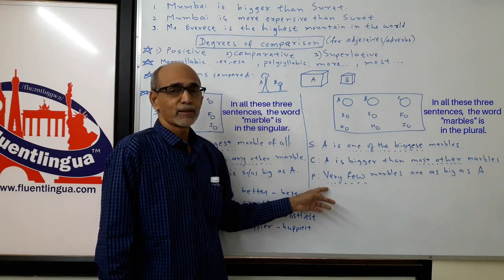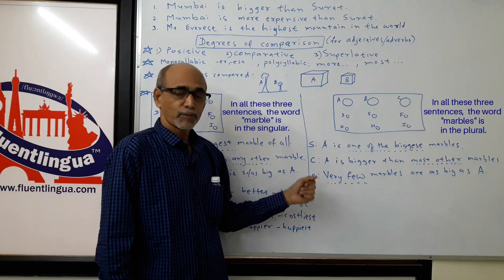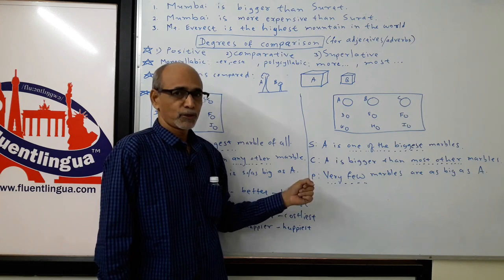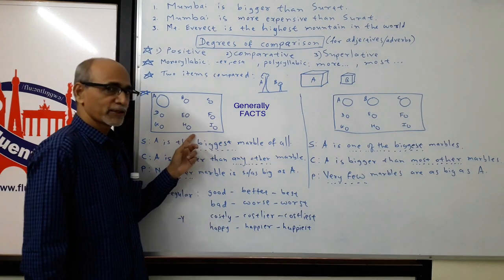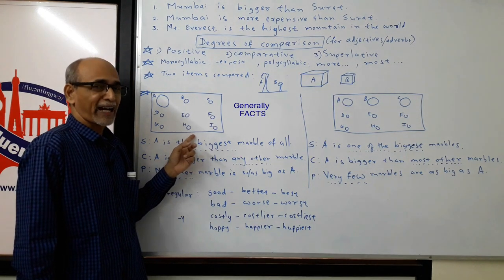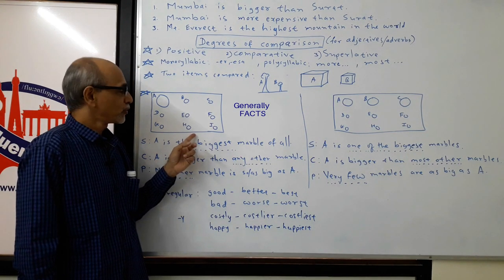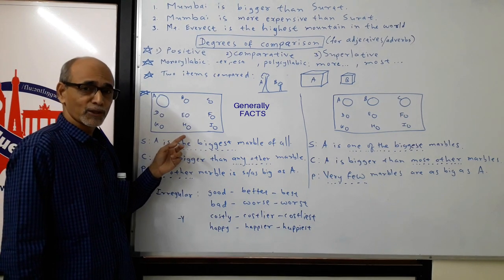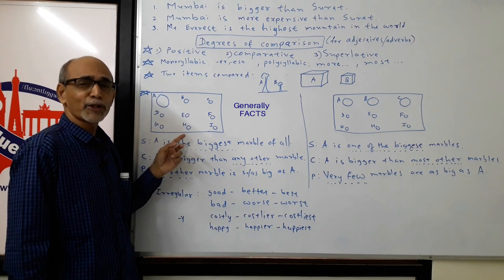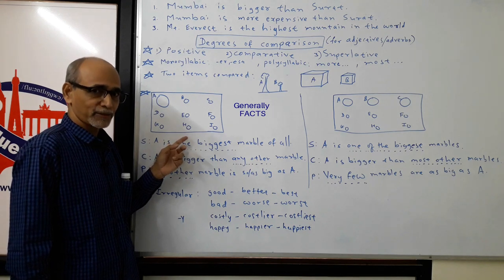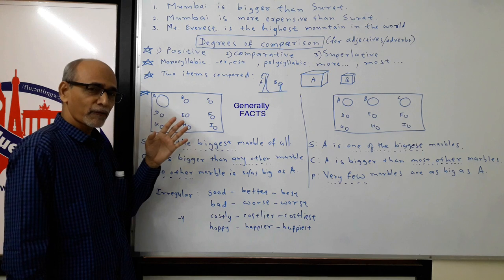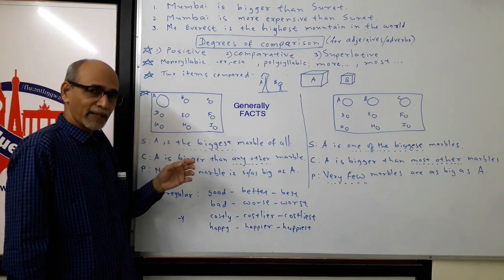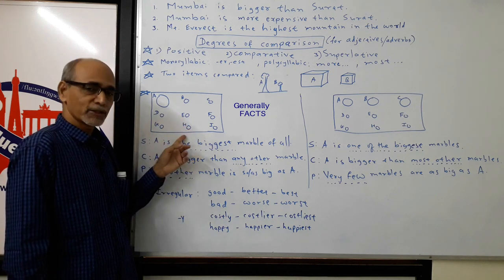That is grammatical structure, but what about the use? From the use point of view, this first pattern is used for factual statements. For example, when you say Mount Everest is the highest mountain in the world, it is the tallest peak in the world, nobody is going to challenge that, it's a fact. When one item is different from the rest, it is more like a factual situation, and in that situation you will use this kind of sentence.